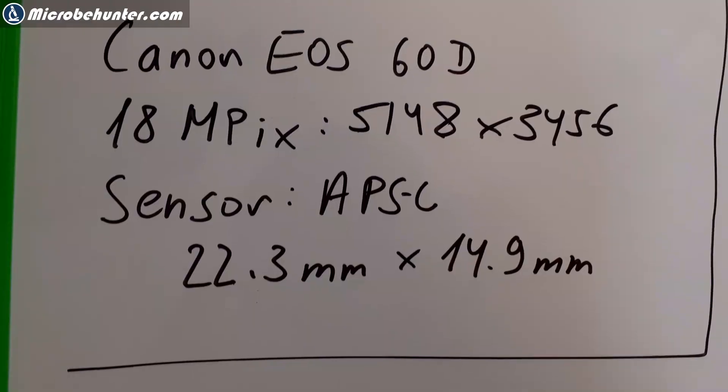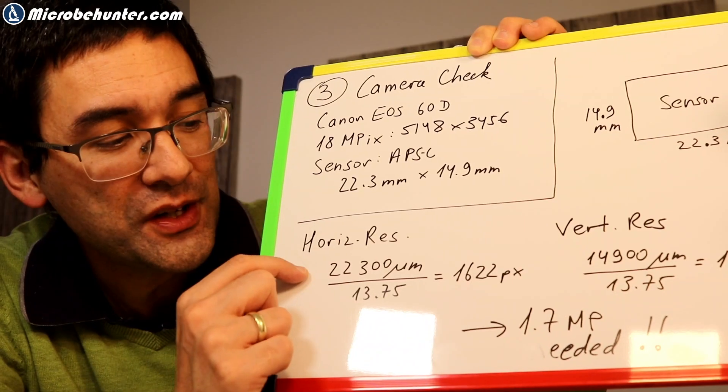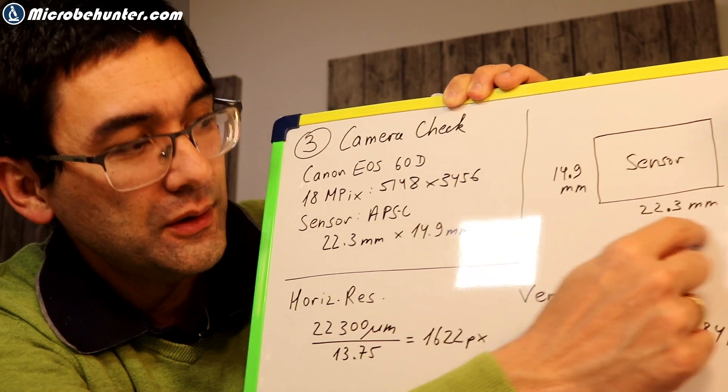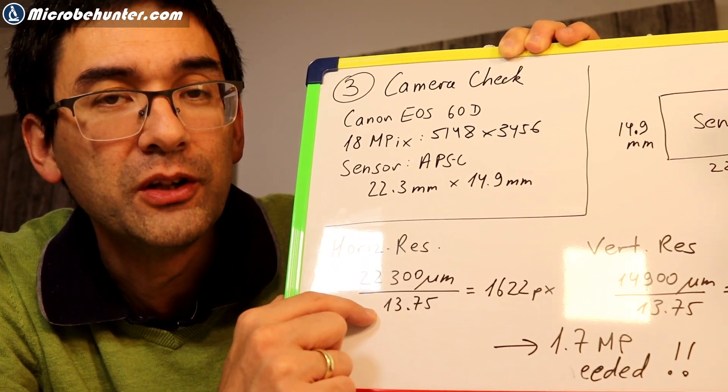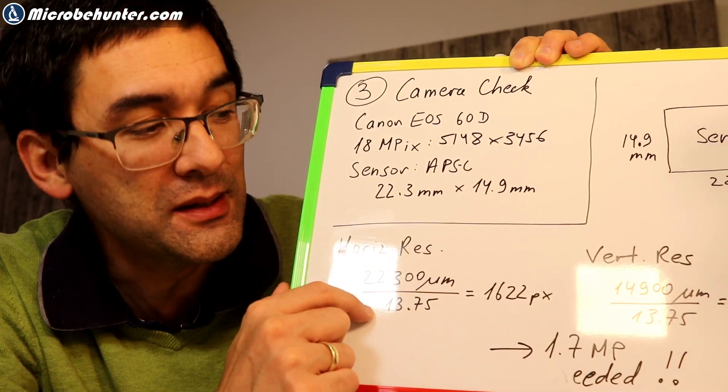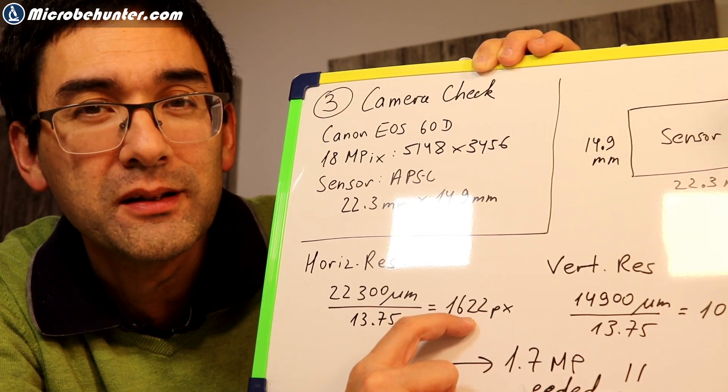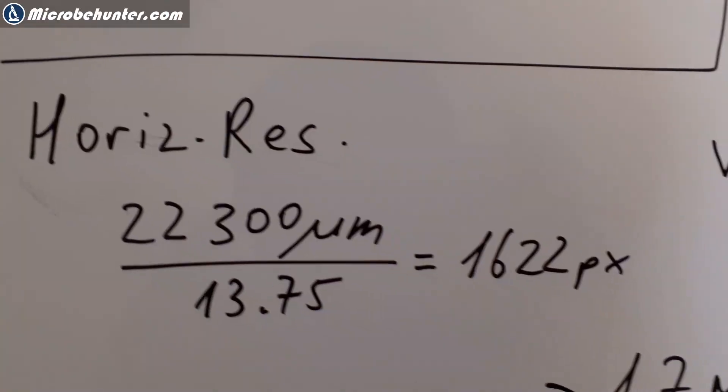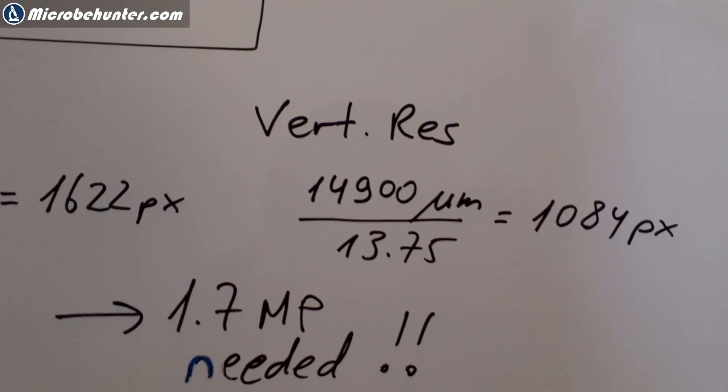So what we're going to do now is we're going to convert these millimeters also into micrometers. And we're going to divide the horizontal resolution. We're going to divide the horizontal one, this one here. We're going to divide this by the 13.75 that we determined just on the other side. That's the required pixel size. And I get over here 1622 pixels. That's what I need. And over here for the vertical, I get 1084 pixels. That's what I need.